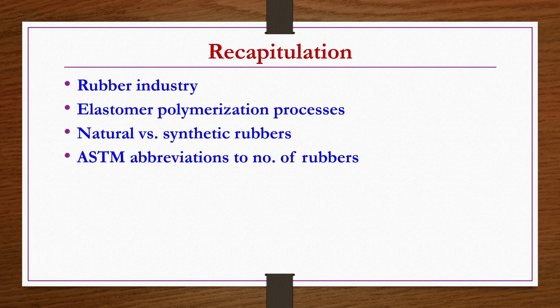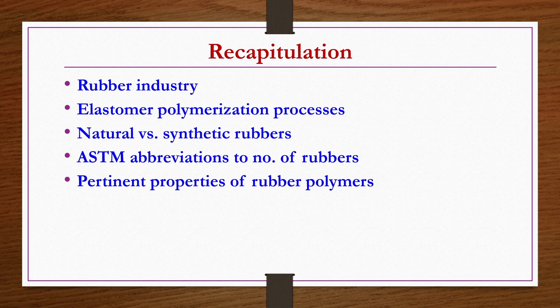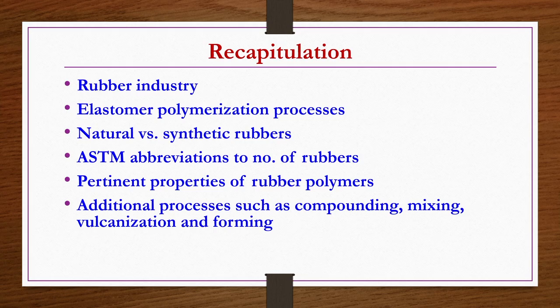We also discussed ASTM abbreviations for different types of rubbers and pertinent properties of rubber polymers quantitatively. We provided a list of properties to check before finalizing applications of a given rubber — a checklist to decide on monomers and polymerization conditions. Quantitative values were not given since properties vary considerably from one rubber to another.